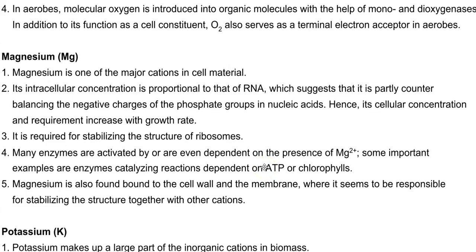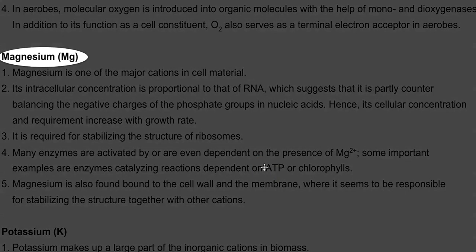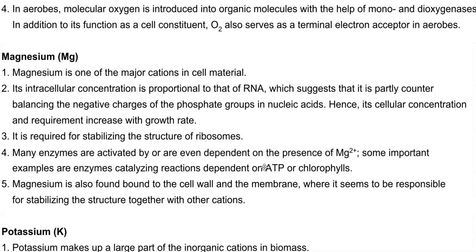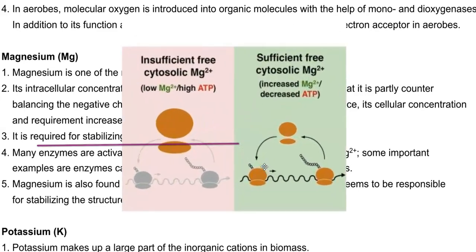The next important element is magnesium. It is one of the major cations present in the cells. Its intracellular concentration is proportional to that of the RNA content of the cells, which suggests that it plays partly a counterbalancing effect on the negative charges of the phosphate molecules in the nucleic acids. Because of this, its cellular concentration and requirement usually increases with the growth rate of the cells. It is also commonly required for stabilizing the structure of the ribosomes, that is by maintaining the large and small subunit structures of the ribosomes intact.